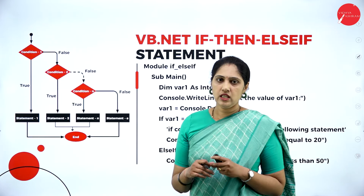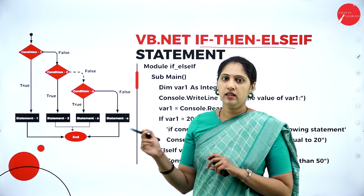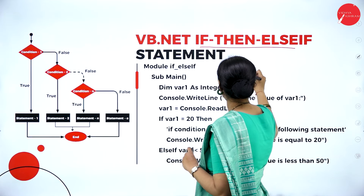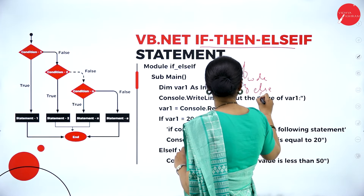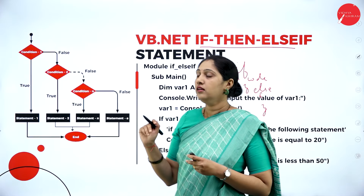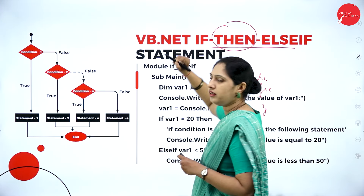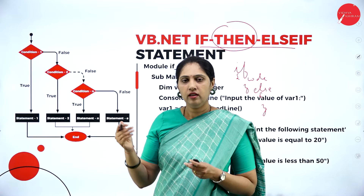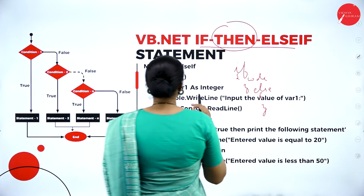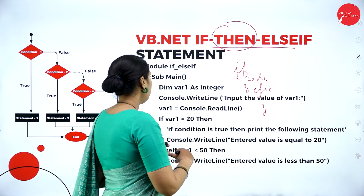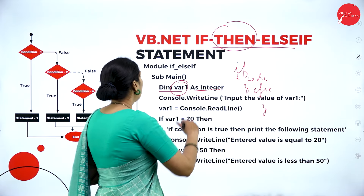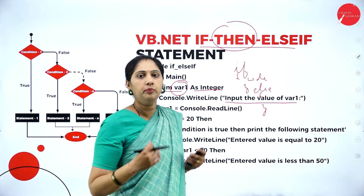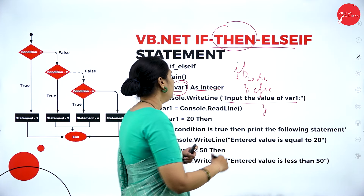VB.NET control statements control the execution of the program. We don't execute continuously — we control execution by giving conditions. If the condition is true, it will execute; otherwise it will come out. The conditional statements used in VB.NET are: if-then, if-then-else, if-then-elseif, and select case. Select case is similar to a switch statement — only syntax difference. Nested select case means you have more than one.